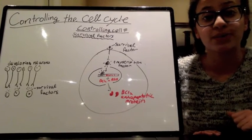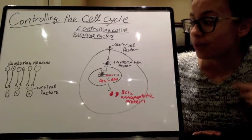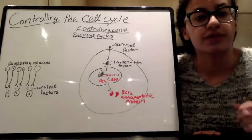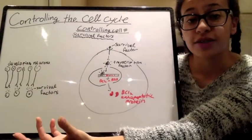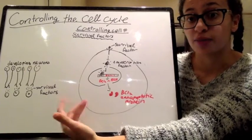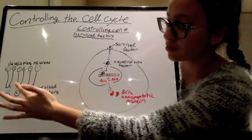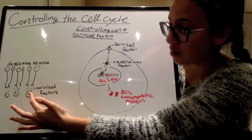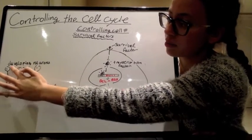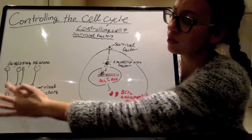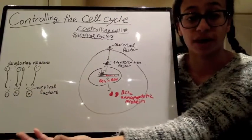We can also control the number of cells through survival factors. So when you are developing your neurons, for example, you secrete a certain amount of survival factors — that's only enough to sustain a certain number of cells. So if you have a whole bunch of neurons, not all of them are going to survive if you only have this much survival factor. Depending on the amount, you'd be losing some of those neurons because there is not enough survival factor to sustain them.